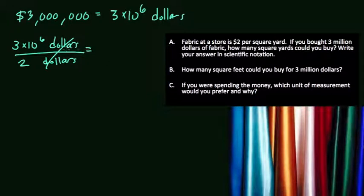Dollars divide out, leaving 3 times 10 to the 6th divided by 2. If you're struggling, rewrite it as 3 times 10 to the 6th over 2 times 10 to the 0. Since 10 to the 0 is 1, that's just 2. Using laws of exponents, 10 to the 6th over 10 to the 0 equals 10 to the 6th. And 3 divided by 2 is 1.5.